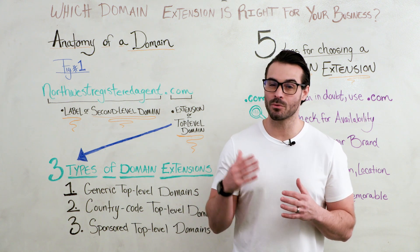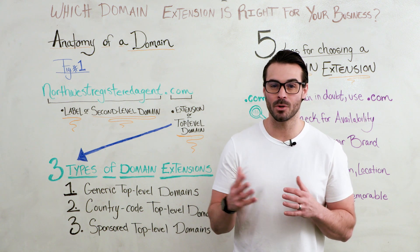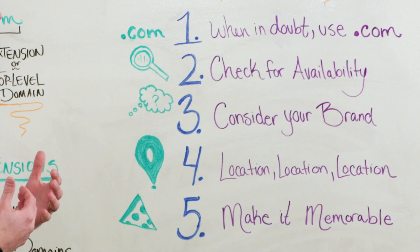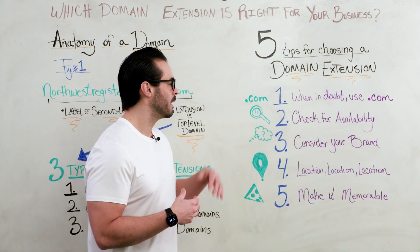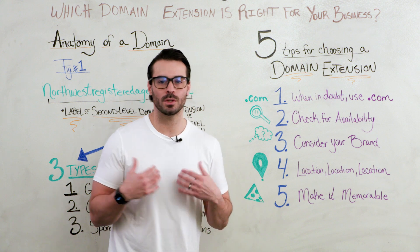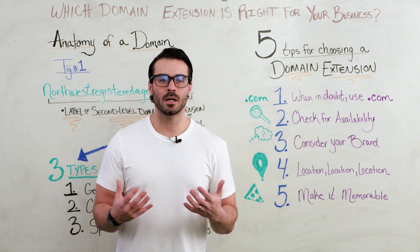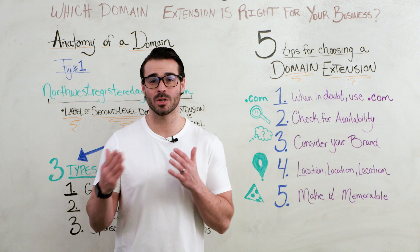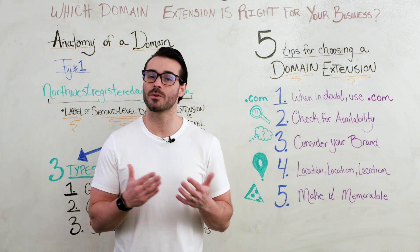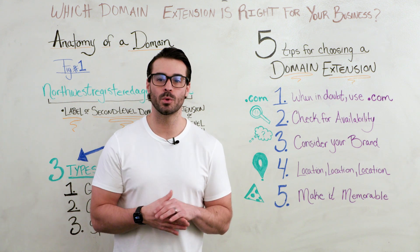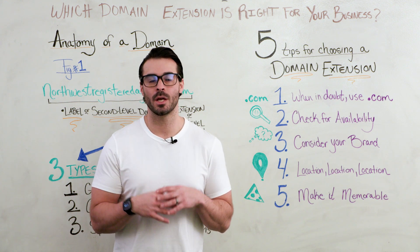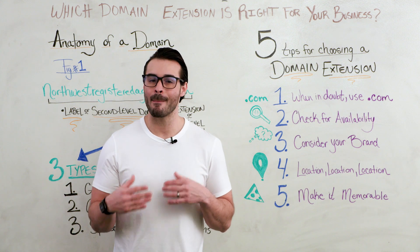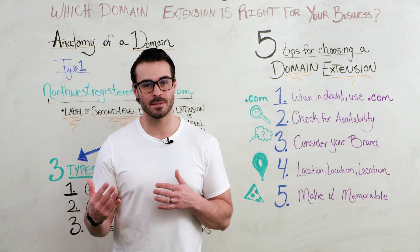Now that we've talked about the three different types of domain extensions, let's talk about five tips for choosing a domain extension. Our first tip is: when in doubt, use .com. .com is so common that many users see it as a more trustworthy source than other extensions. However, due to its popularity, your chosen domain name with a .com extension may not be available or may be more expensive.